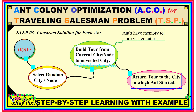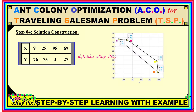Step 3 is to construct the solution for each ant. For any ant, we will first select a city randomly, then build the tour from that randomly selected city to the unvisited cities. The ant has memory to store visited cities. Once all cities are visited, we return the ant to the randomly selected starting city.